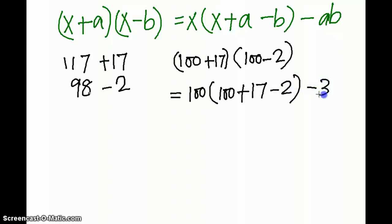So a into b is 34. Here you can see that 17 is our a and 2 is b.